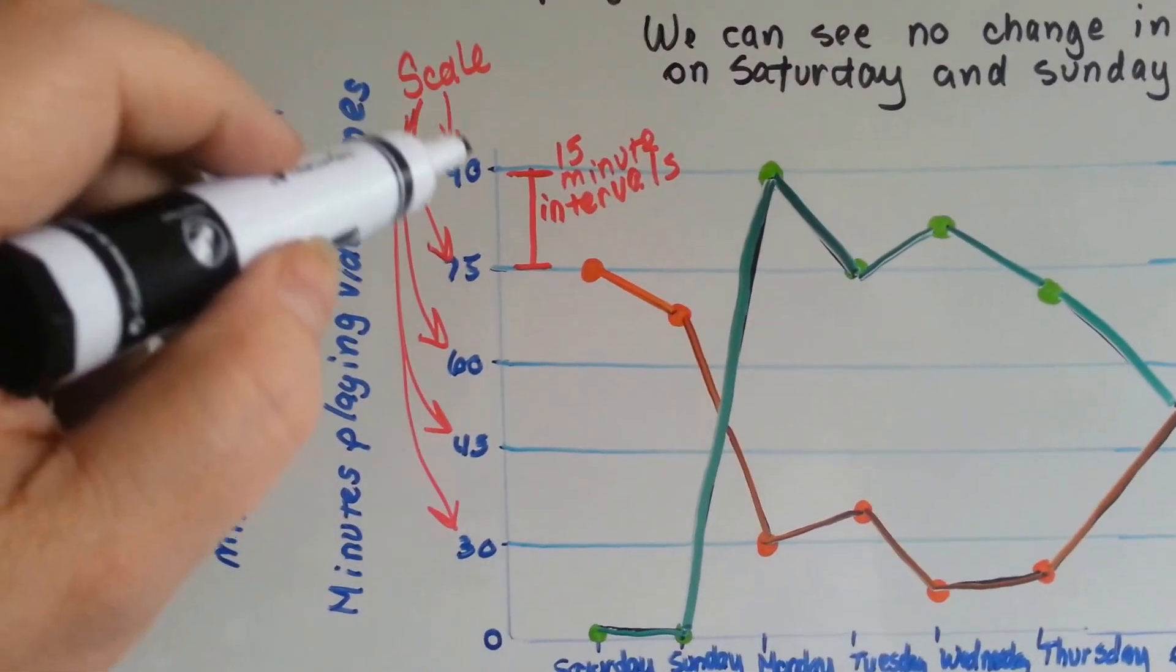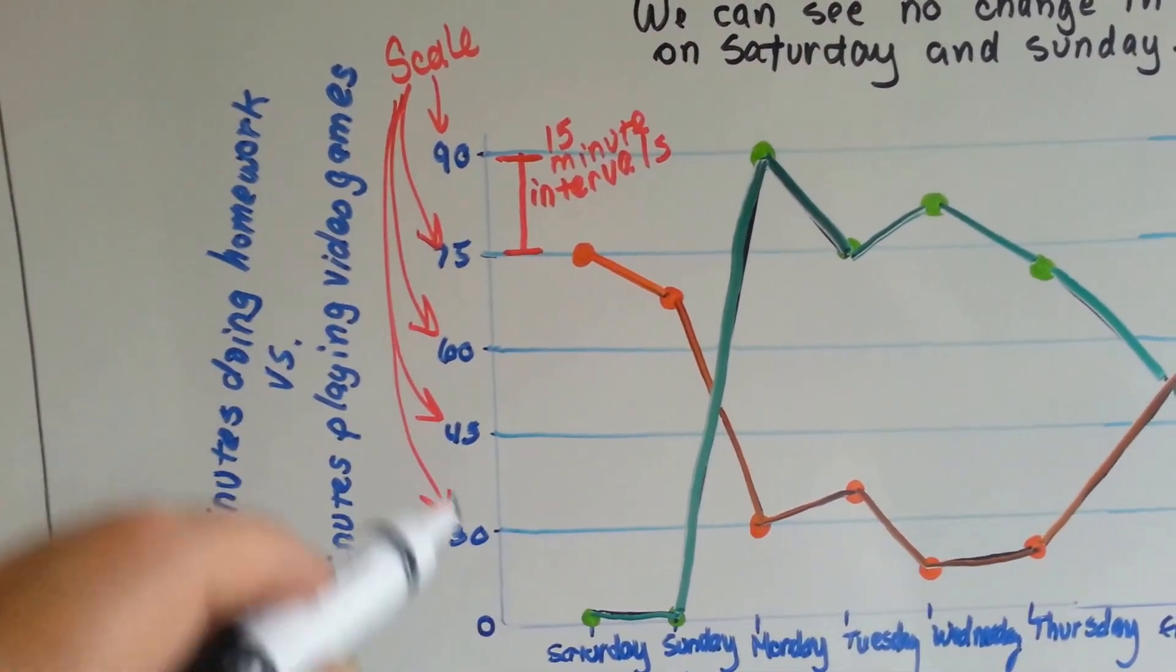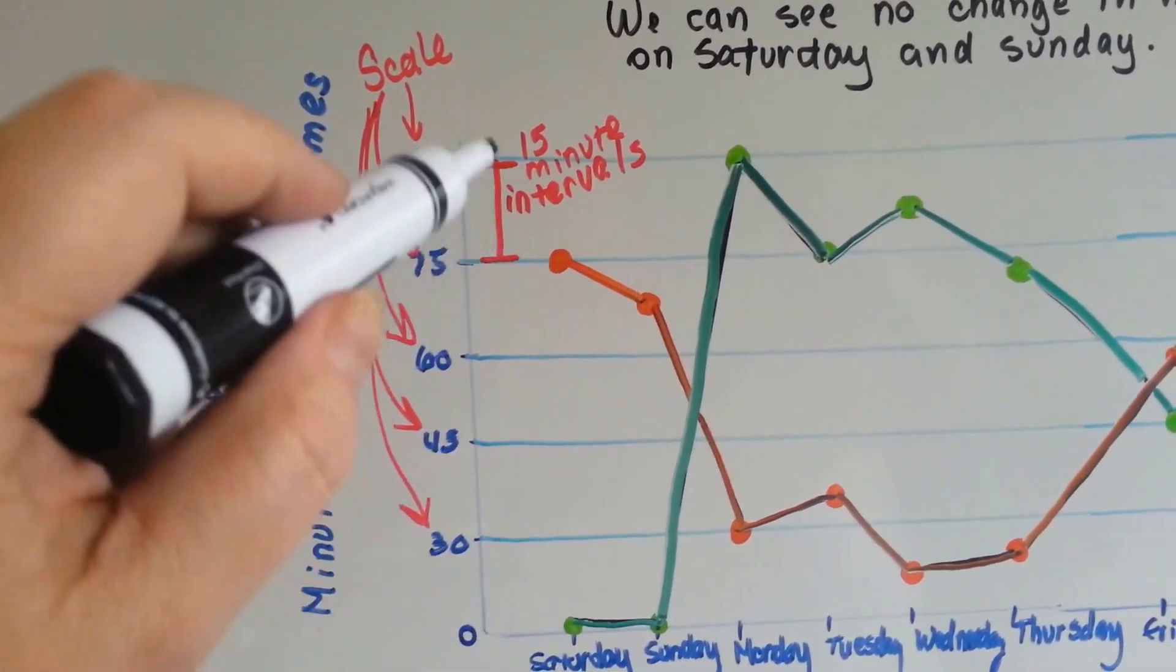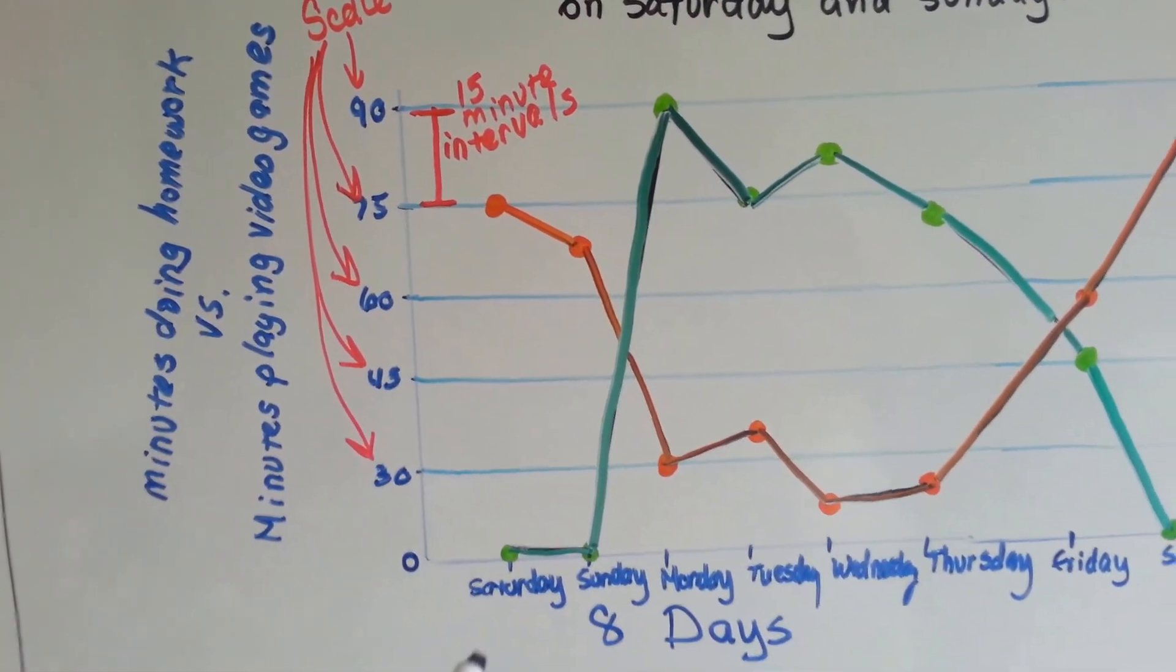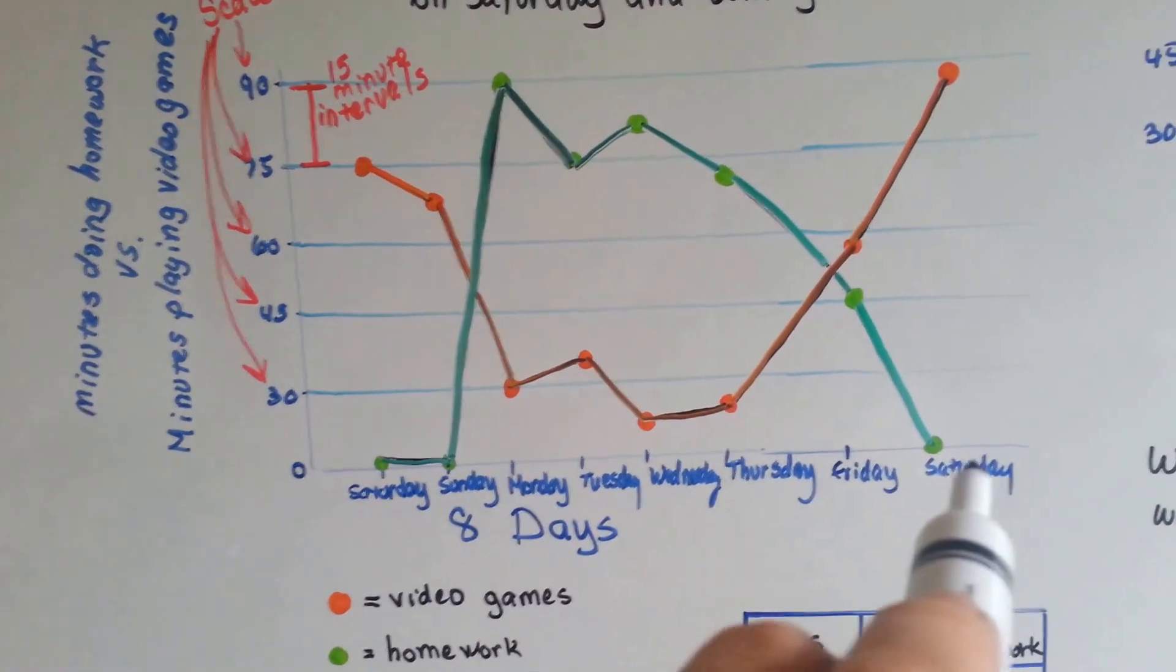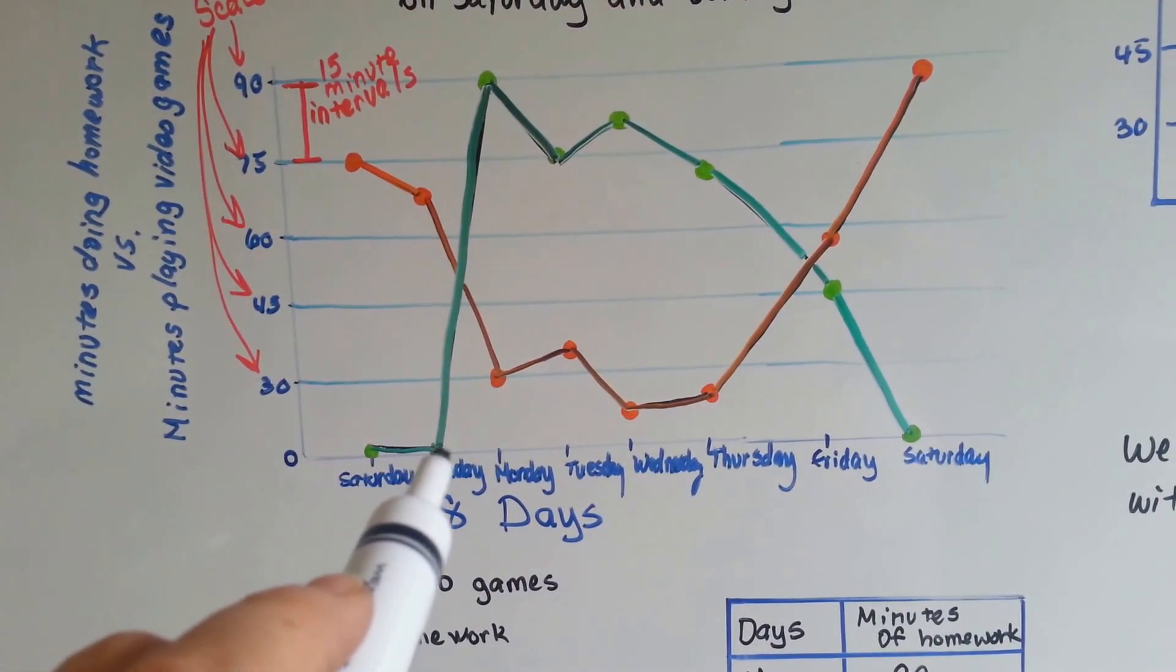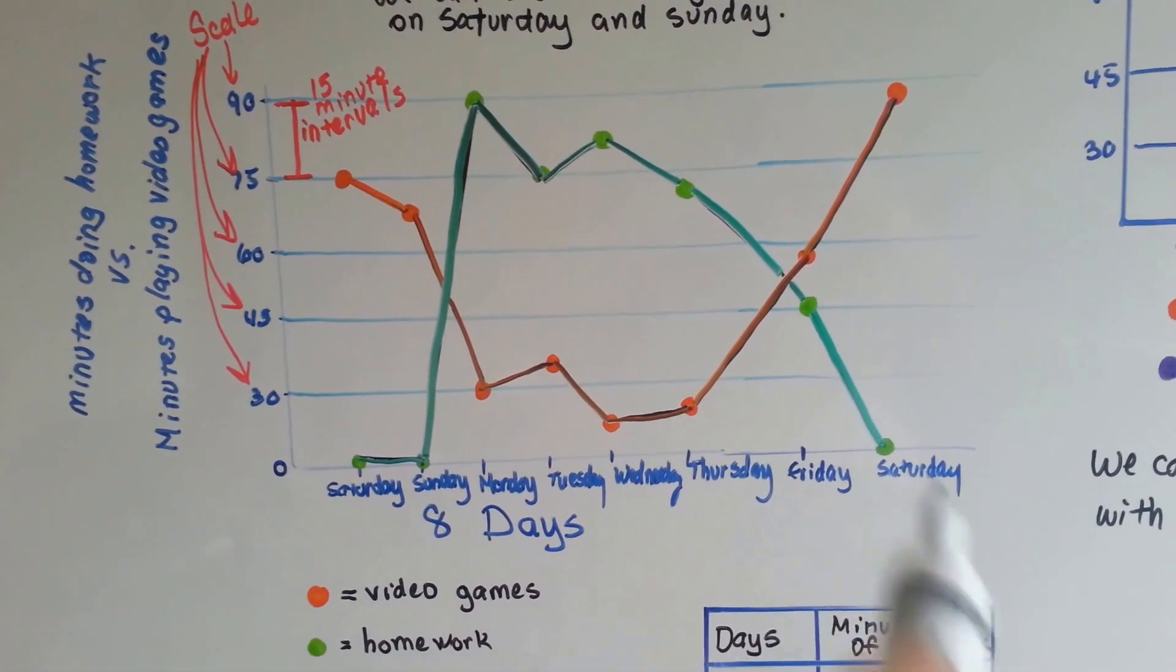The scale is the numbers coming down along the side here, and you can see the intervals are 15 minute intervals. For here the scale is the days of the week and the intervals are in between each day.